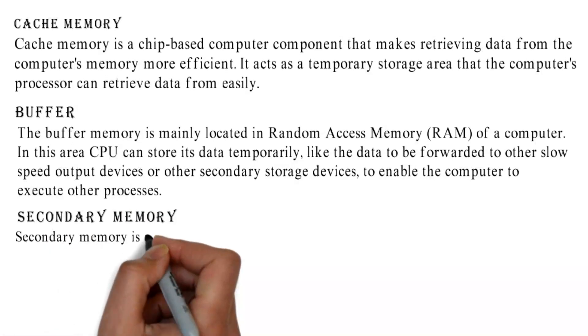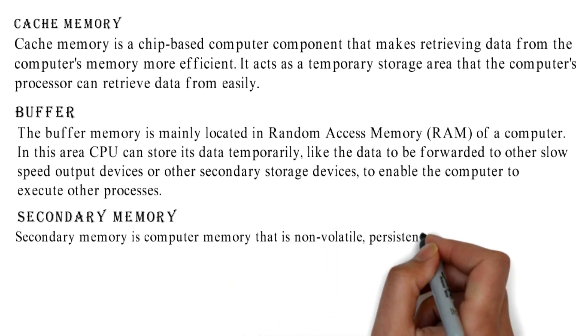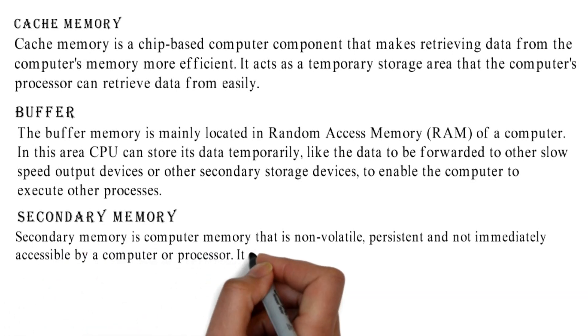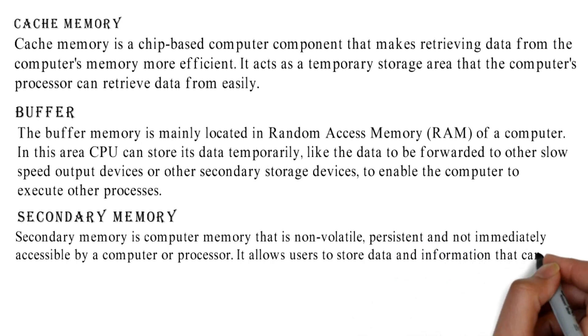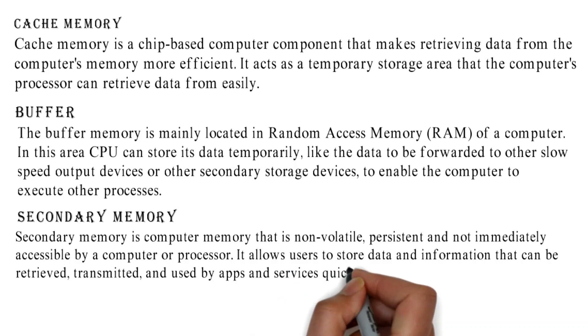Secondary memory is computer memory that is non-volatile, persistent, and not immediately accessible by a computer or processor. It allows users to store data and information that can be retrieved, transmitted, and used by apps and services quickly and easily.